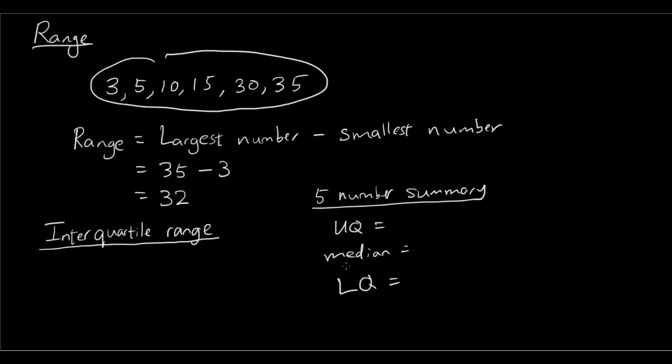So the first thing we're going to find is the median. If we have a look, there are 1, 2, 3, 4, 5, 6 numbers. The position of the median is n plus 1 over 2. So median position is 6 plus 1 over 2, which is 7 over 2, which is 3.5. So the median exists here.